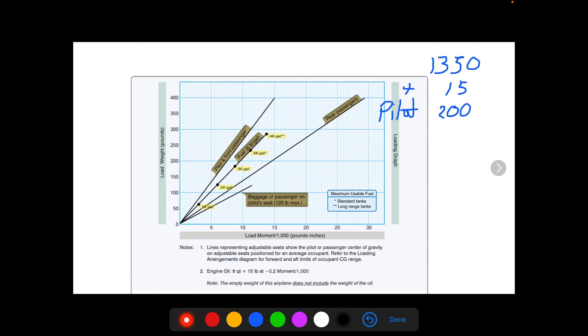So that gives us a moment over a thousand of 7.5 for the pilot who weighs 200 pounds. And let's say we were given that fuel is 30 gallons, so 30 gallons of fuel. So again, we're now going to use the fuel line.